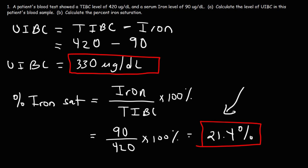So what does this number mean? The percent iron saturation tells us the amount of iron that's actually attached to iron binding proteins in the blood. The main iron binding protein is a protein called transferrin. So if we have 100 iron binding proteins, about 21 of them will actually be attached to iron. The other 79% won't be attached to iron.